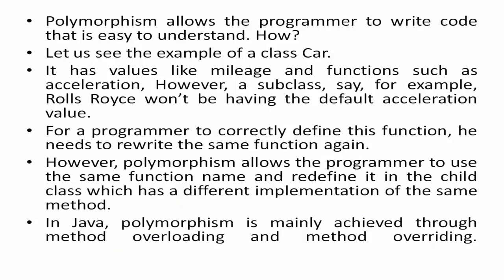Polymorphism allows the programmer to write code that is easy to understand. For example, consider the class 'Car' — it has values like mileage and functions such as acceleration. However, a subclass like Rolls-Royce will have a different default acceleration value. Without polymorphism, a programmer needs to rewrite the same function again. Polymorphism allows the program to use the same function name and redefine it in the child class with a different implementation. In Java, polymorphism is mainly achieved through method overloading and method overriding.